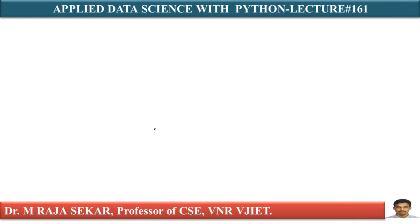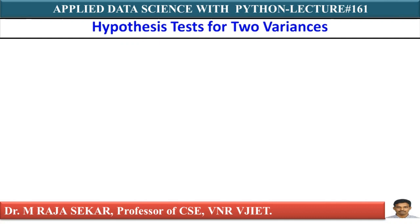Welcome to Rajashekar Classes on Applied Data Science with Python. This is lecture number 161. In this lecture, we will try to understand hypothesis test for two variances. We will continue with two-sample hypothesis testing, and we will see how to compare population variance of two populations.